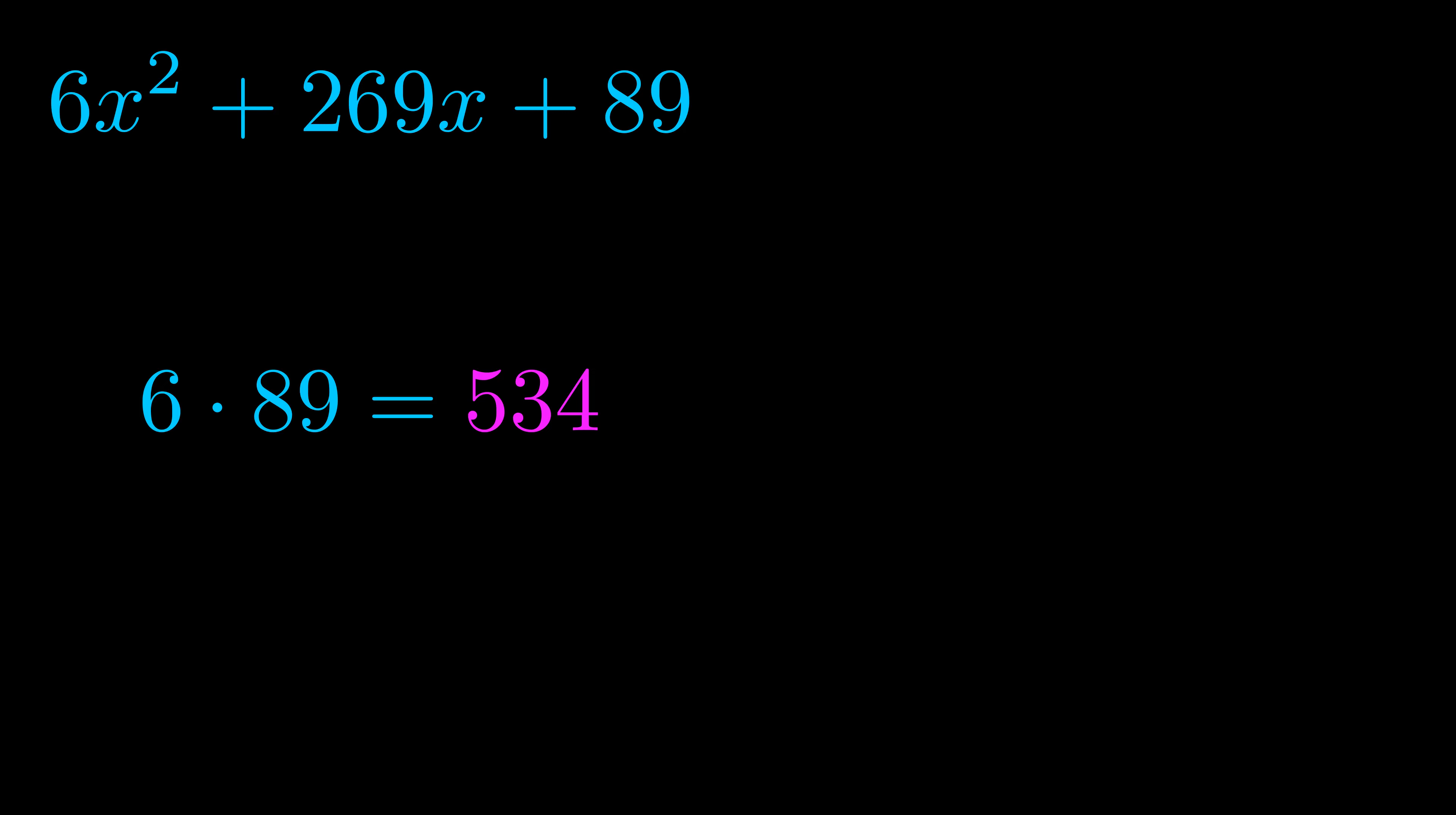Step two is to try to find all of the pairs which multiply to this number. Now it turns out you don't really need to find all of them but go ahead and write down as many numbers as you can that multiply to the magenta value for now. Pause the video and resume when you're ready to continue.